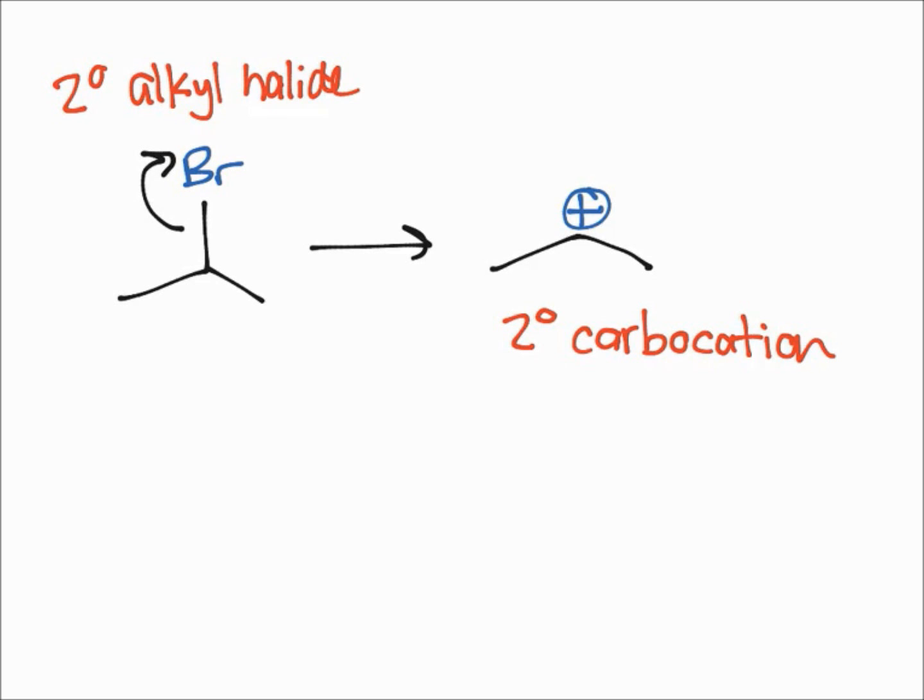This would be the secondary carbocation that would be formed from this secondary alkyl halide. After you finish with the E1 elimination you're going to have this as your final product, and you could have a pi bond on either side.